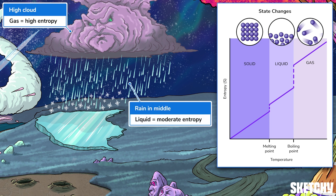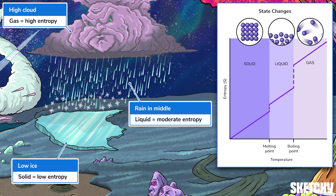Condense that gas into a liquid, like this rain, and the molecules become a bit more orderly and less dispersed — entropy decreases. And if that same matter assumes a solid state, like this sheet of ice, molecules are highly organized, don't move around much, and entropy is at its lowest.